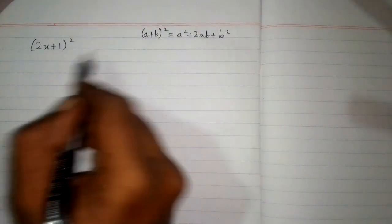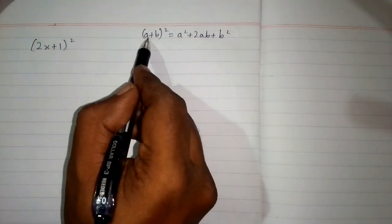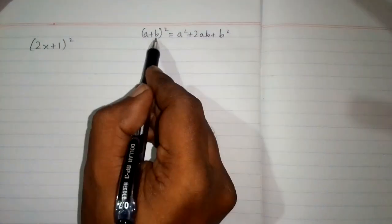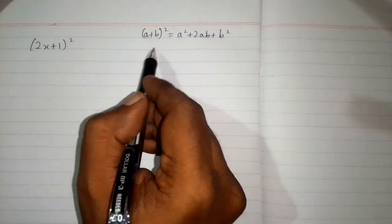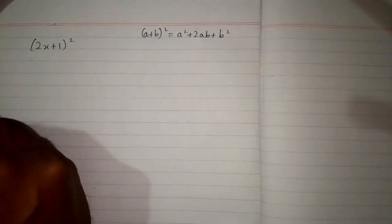Here we can see that we have 2x in place of a and 1 in place of b. We will put these values into the formula.